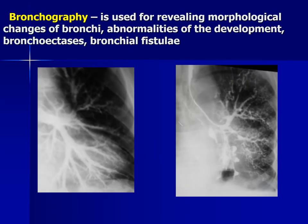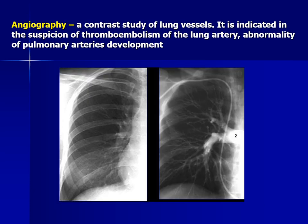Bronchography is used for revealing morphological changes of bronchi, abnormalities of development, bronchiectasis, and bronchial fistula. Angiography is a special contrast x-ray method — it is a contrast study of lung vessels, indicated in suspicion of thromboembolism of the lung artery or abnormality of pulmonary artery development. Comparing two x-ray films — without and with contrast agent — we see the difference: here the contrast agent is visible in the vessels.